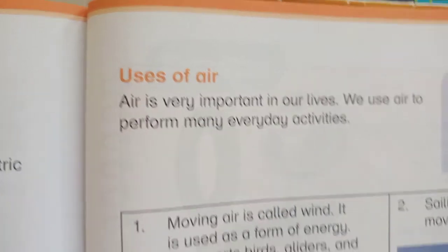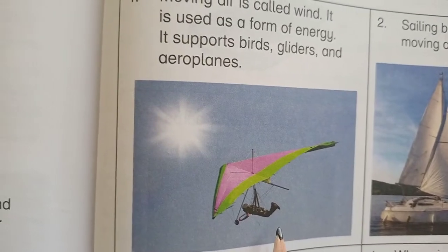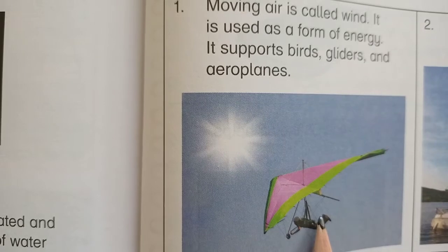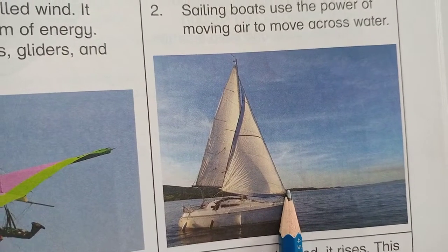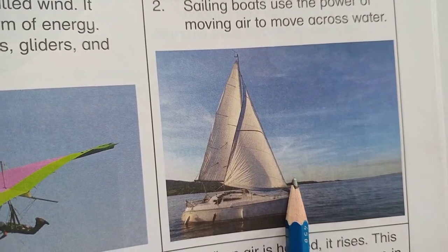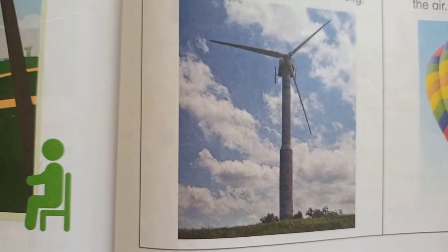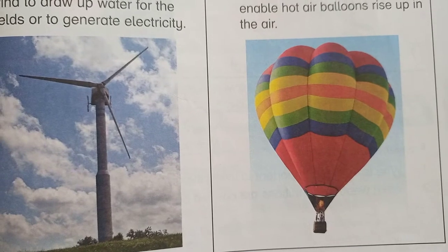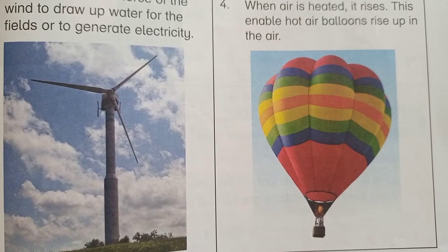If you use simple moving air, you will see a glider — gliders use the energy of moving air. The second diagram is a sailing boat — this is also the power of moving air. The third is a windmill, which uses moving air. The fourth diagram is a hot air balloon — this also uses moving air.